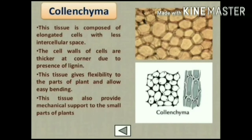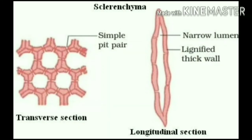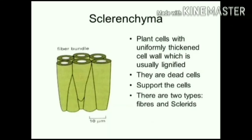Another type of permanent tissue is sclerenchyma, which makes the plant hard and stiff. The husk of a coconut is made up of sclerenchyma tissue. The cells of this tissue are dead. They are long and narrow, with walls thickened due to lignin — often so thick that there is no internal space inside the cell. This tissue is present in stems, around vascular bundles, in the veins of leaves, and in the hard covering of seeds.